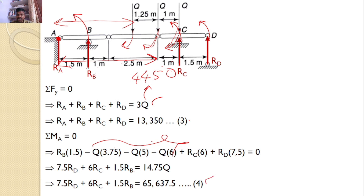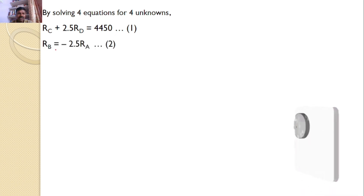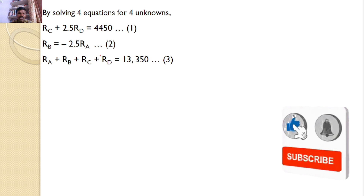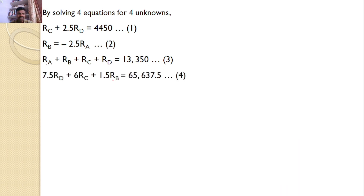In total I have 4 equations and 4 unknowns: R_A, R_B, R_C, and R_D. The four equations are: Equation 1: R_C plus 2.5·R_D equals 4,450. Equation 2: R_B equals minus 2.5·R_A. Equation 3: R_A plus R_B plus R_C plus R_D equals 13,350. Equation 4: 7.5·R_D plus 6·R_C plus 1.5·R_B equals 65,637.5. Nowadays we have sophisticated calculators, but I am also giving the conventional way to solve these 4 equations.